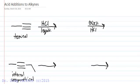Let's review acid additions to alkynes. With alkynes, we have an extra pi bond, which means we have the ability to react twice.